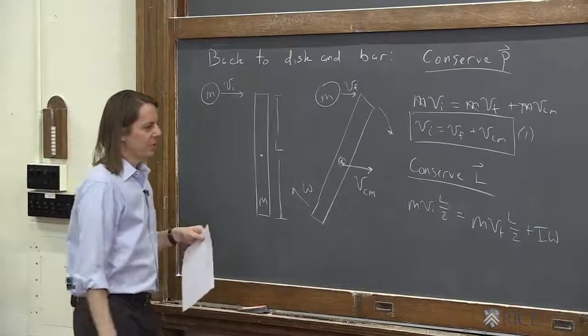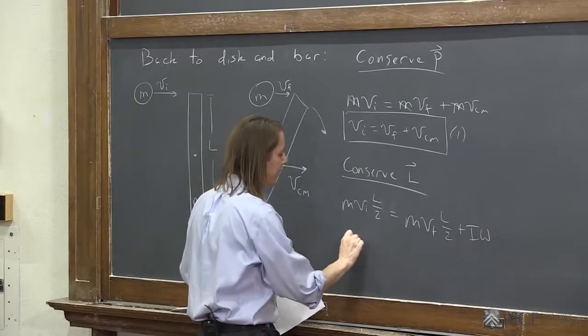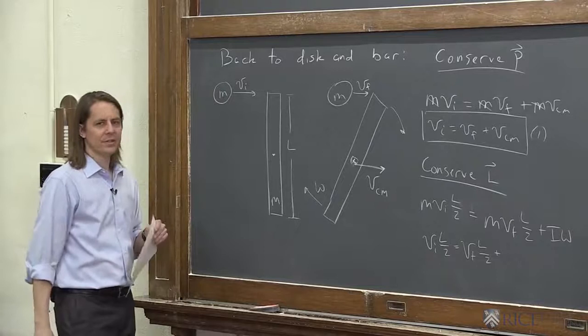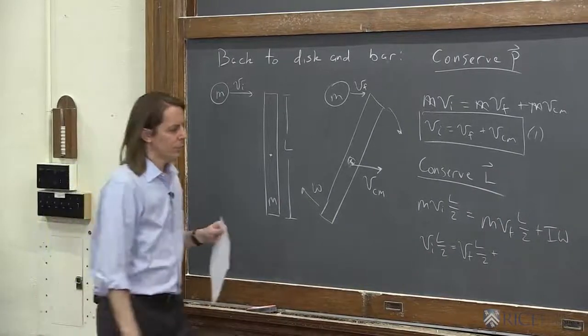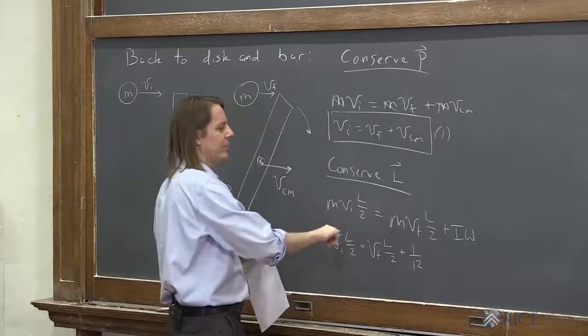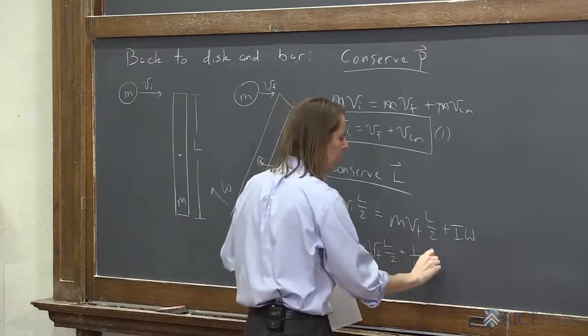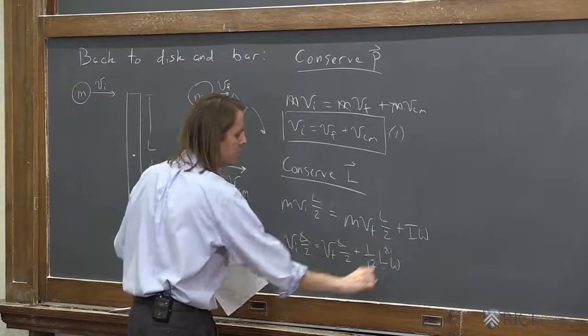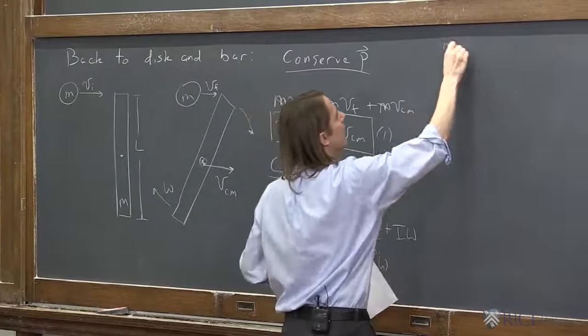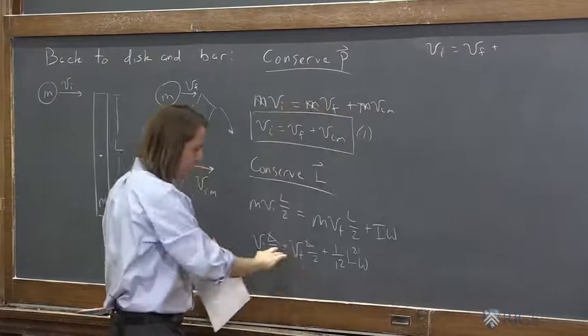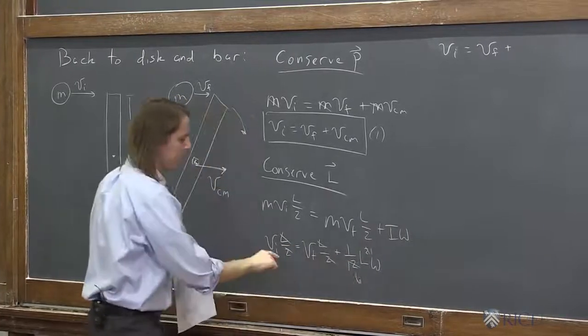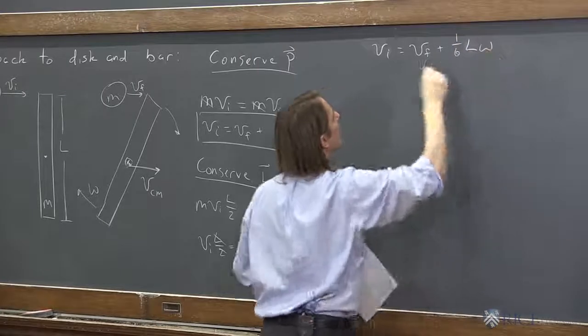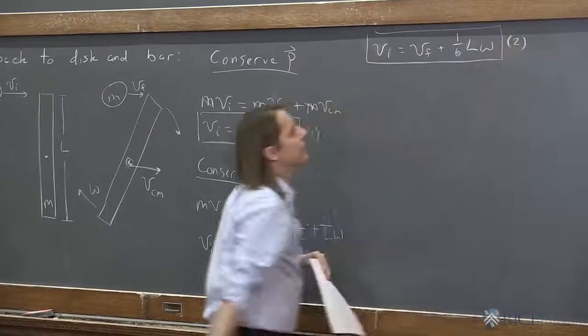We can simplify this one since our masses match and there's Ls everywhere. We can get rid of some M's. Vi L over 2 equals Vf L over 2 plus, and now let's plug in for the moment of inertia of a bar. It's 1/12 ML squared. So 1/12. The M we already canceled. So the M went away with these M's. L squared omega. And then we can simplify it even a little bit more. We can cancel one of the Ls here. And then we get Vi equals Vf. The initial velocity equals the final velocity plus, we're also going to cancel the two. Initial velocity is final velocity plus 1/6 of L omega. And that is equation two from our second conservation law.